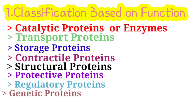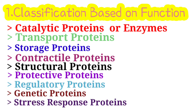Genetic proteins are proteins associated with DNA — for example, histones. Stress response proteins help the organism survive under stress — for example, heat shock proteins, which are produced in response to stressful conditions like heat shock, cold, UV light, and during wound healing.